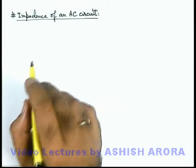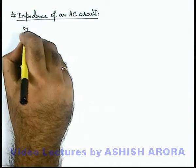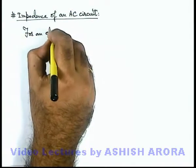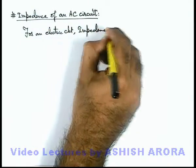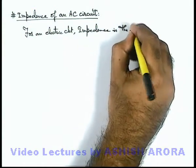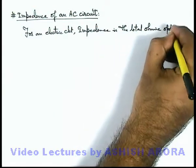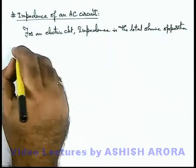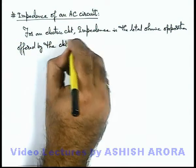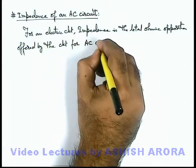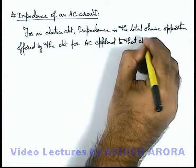Now we'll study a very important section in alternating current circuits: the impedance of an AC circuit. For an electric circuit, impedance is the total ohmic opposition offered by the circuit for AC applied to that circuit.